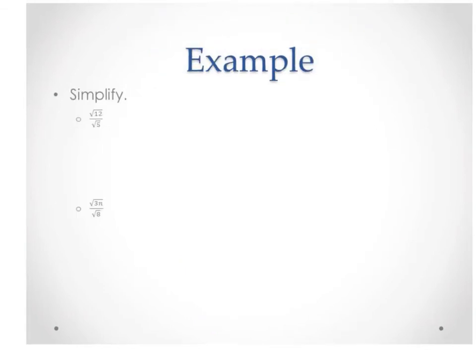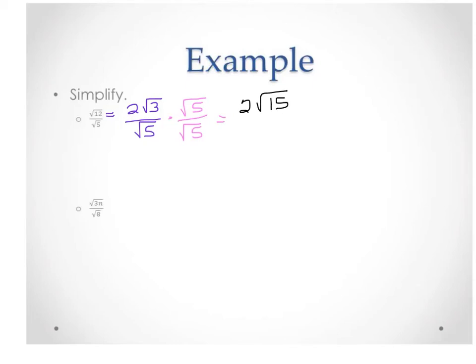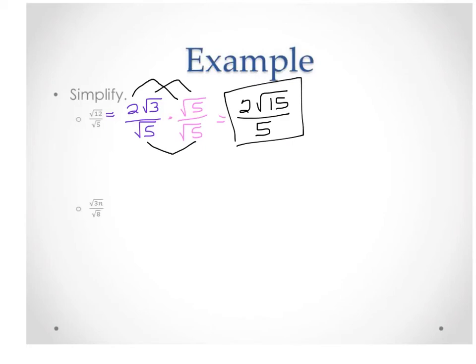You might simplify first. For square root of 12 over square root of 5: square root of 12 simplifies to 2 square root of 3, so we have 2 square root of 3 over square root of 5. We can't have that square root of 5, so multiply by square root of 5 over square root of 5. On top we get 2 square root of 15. On the bottom, square root of 5 times square root of 5 is square root of 25, which is 5. So the answer is 2 square root of 15 over 5. For square root of 3 over square root of 8: simplify square root of 8 to 2 square root of 2, giving square root of 3 over 2 square root of 2. Multiply by square root of 2 over square root of 2 to get square root of 6 over 4.